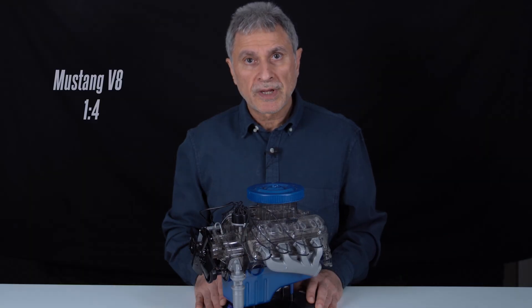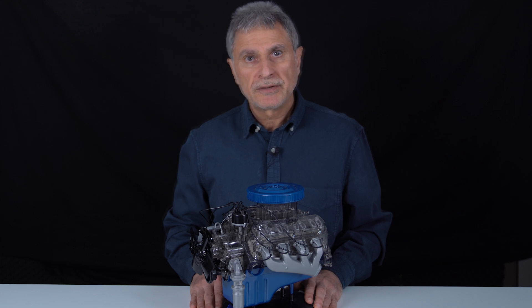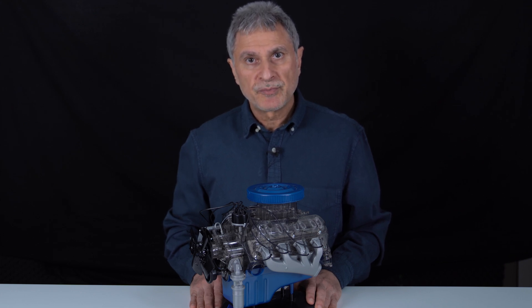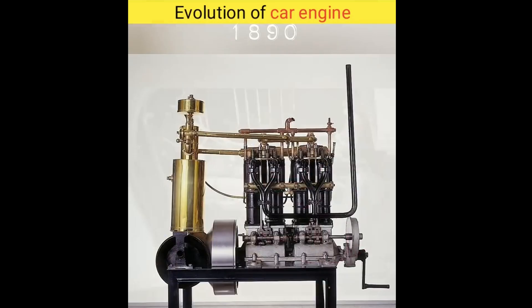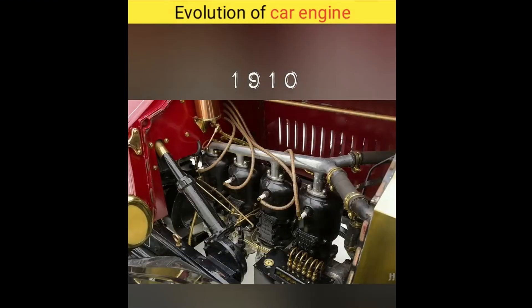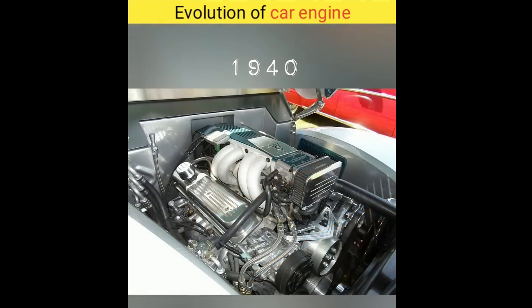This is a Ford Mustang V8 engine. What does the operation of this car engine depend on? First of all, humanity's knowledge is required to produce this engine. It has been improved every year since the invention of the first engine. Hundreds of engineers have worked on it since its first production.